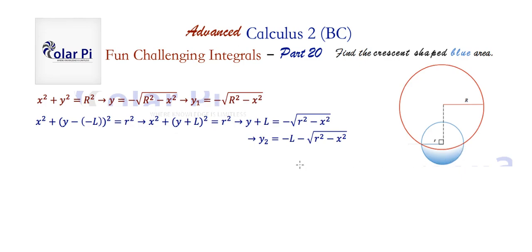Now using good old calc one, I'm going to find the area of this crescent-shaped region by doing the integral of y1 minus y2, integrated from this point here along x to this point here. This point along x is negative r, and this point here along x is positive r. Therefore, our area of interest is the integral from negative little r to little r of y1 minus y2 dx.